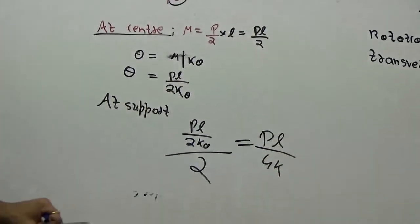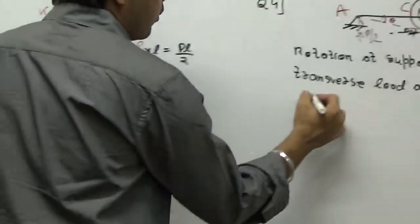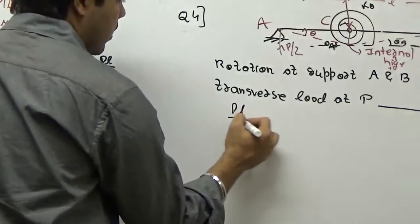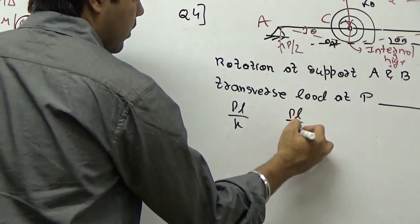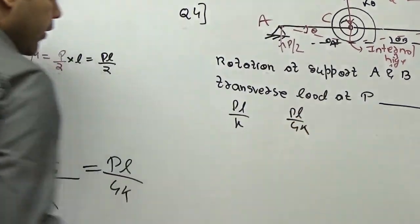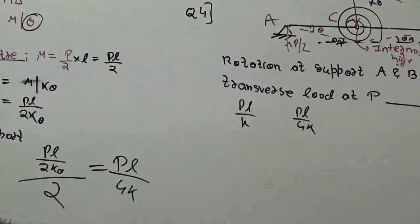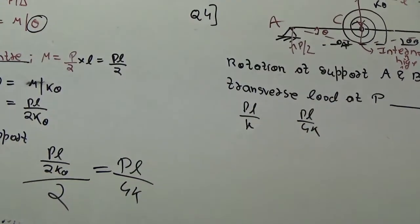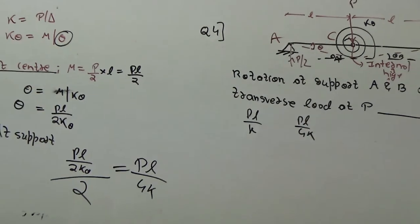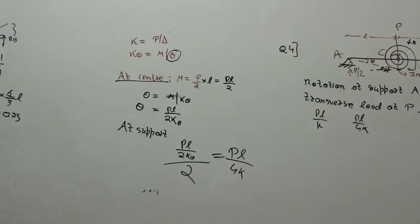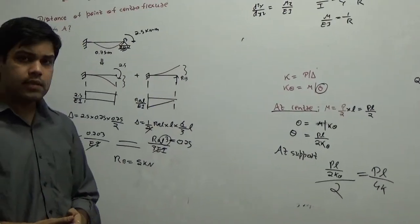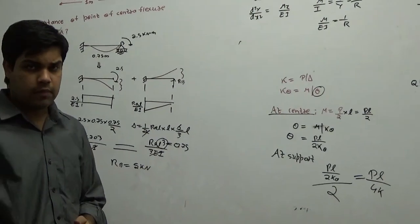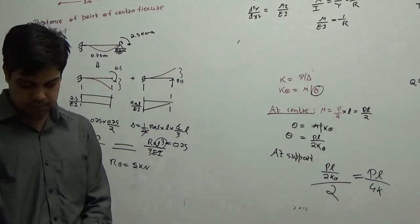The options given were PL over K, PL over 4K, and similar expressions. The answer to that problem is PL over 4K. These are some of the problems on GATE 2015 Set 2. In the next video we will see GATE 2014 problems. Thank you very much.